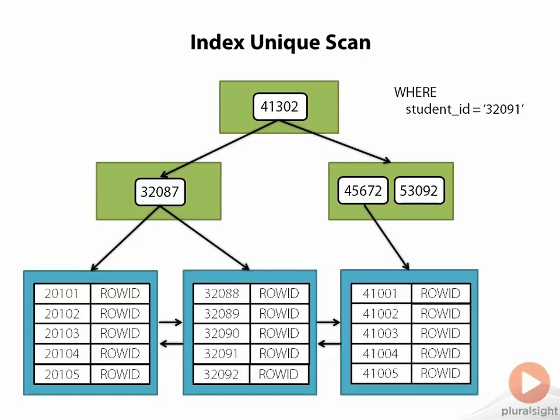Once Oracle locates this information, it can go ahead and perform a table access by row ID. If you ever query data in a table based on the primary key, this is the operation that Oracle will use, and this operation is why primary key queries are so fast. Traversing the index structure is typically only three or four I/O operations, and then there will be a single I/O operation to get the actual row data from the table. So Oracle is able to locate the row with a minimum amount of effort.